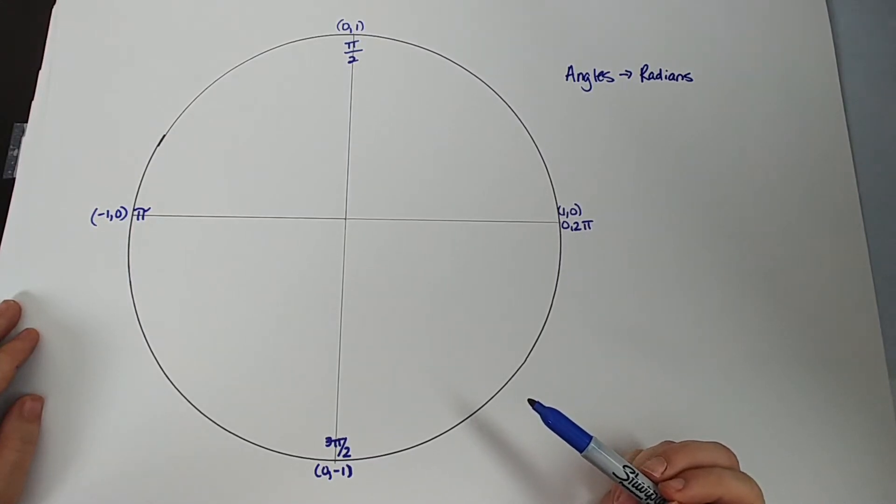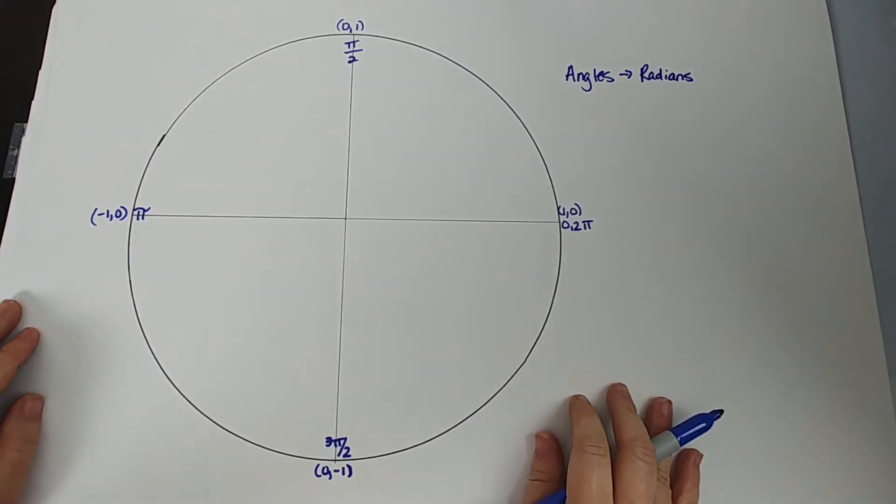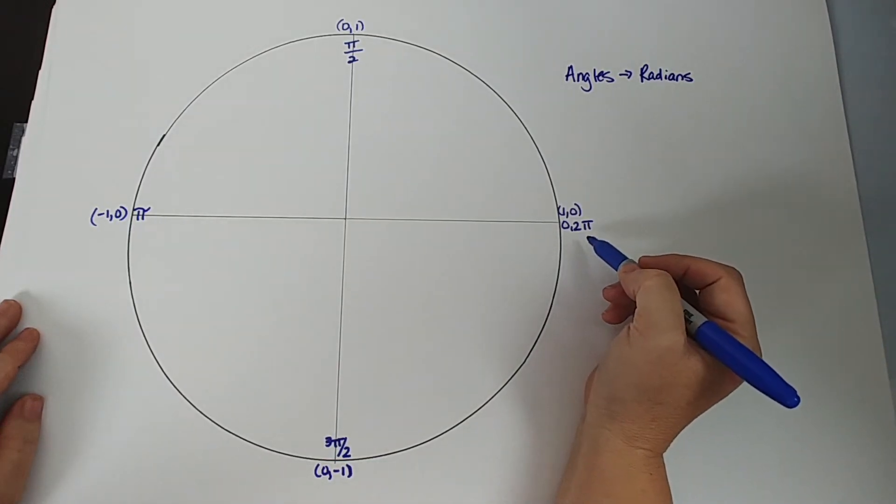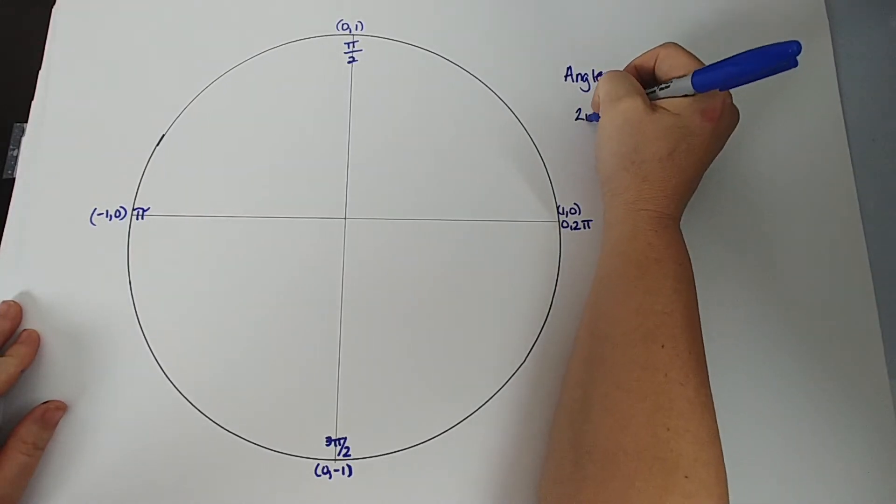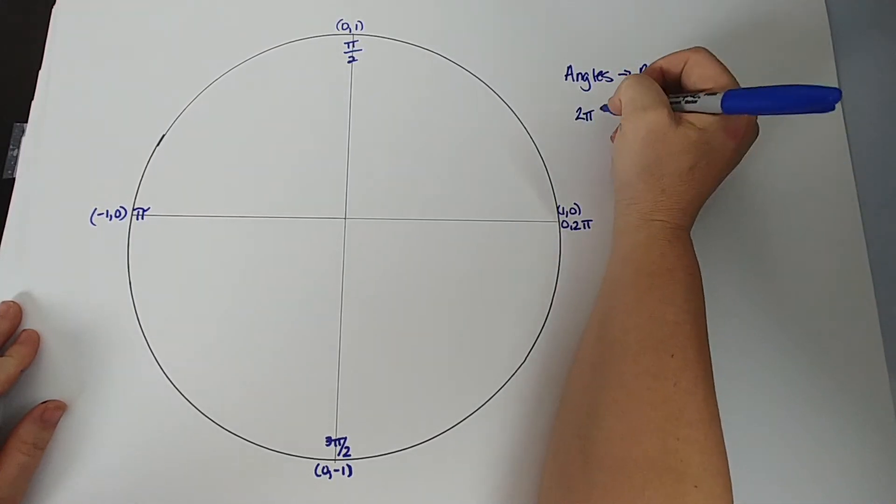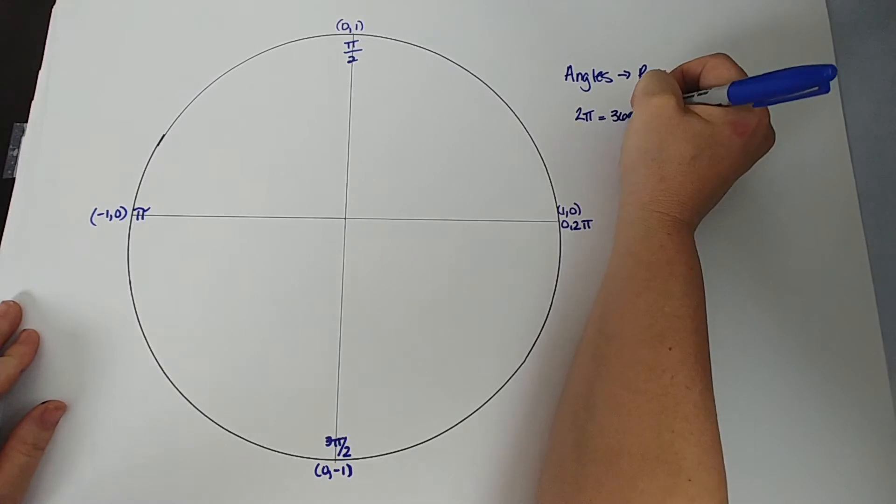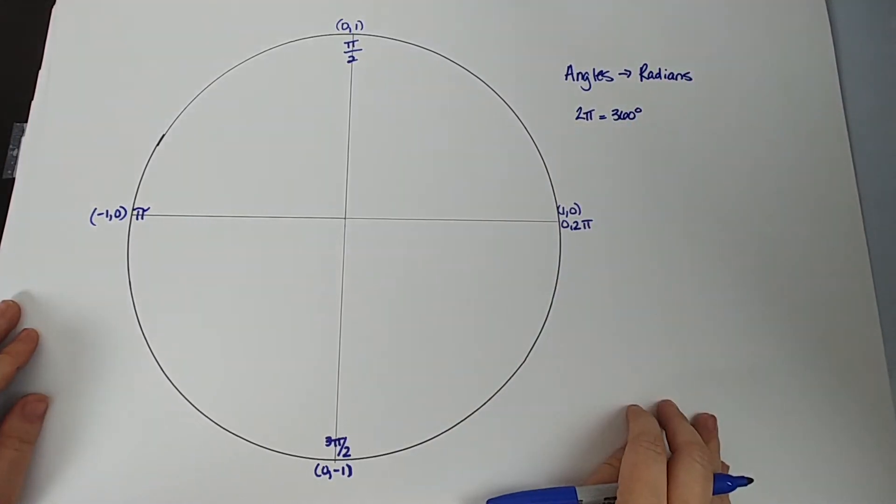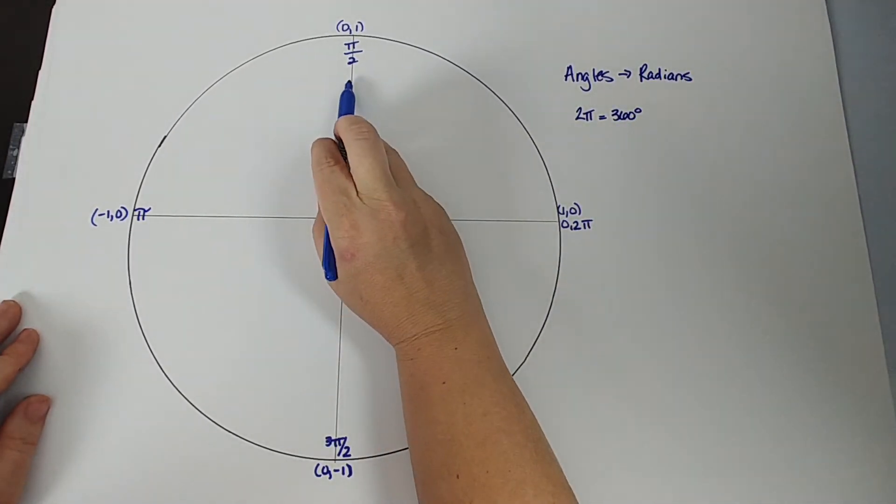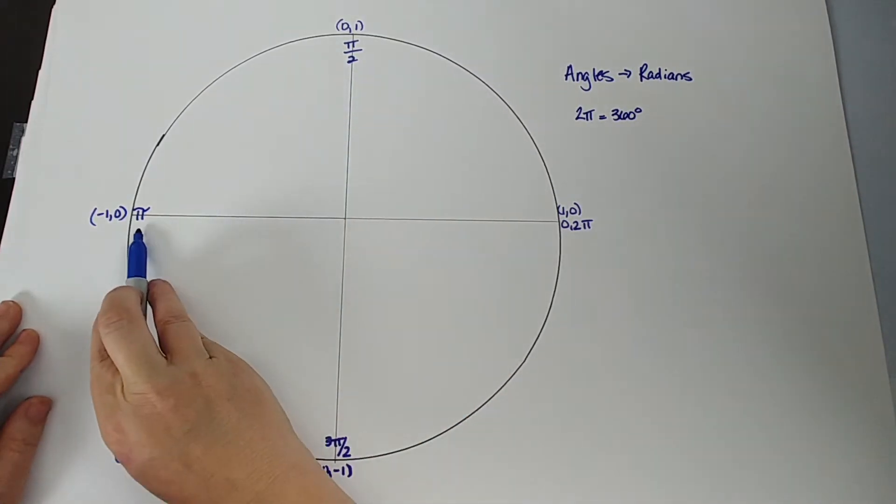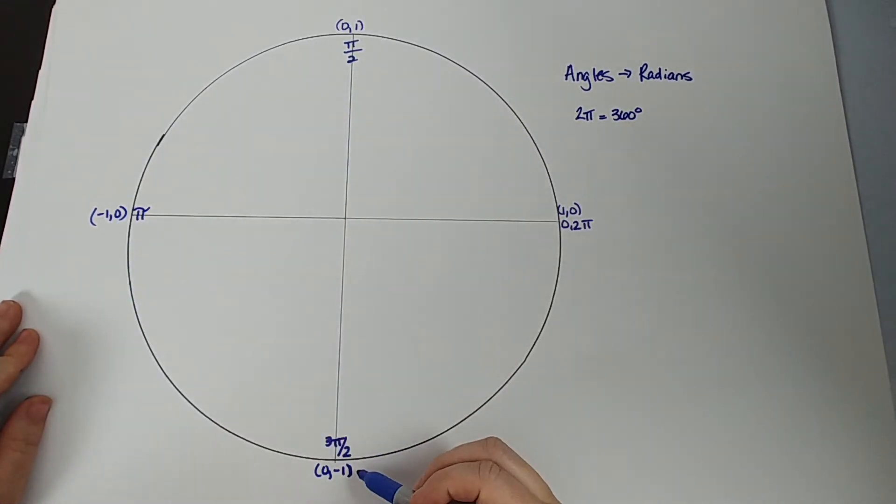We use it to figure out all of our different SOHCAHTOA sine values, cosine values, tangent values. It is super helpful, but you need to memorize it for that quiz where you have to fill out the whole thing. So let's do it. We're going to assume that you know that the unit circle starts at 0 and ends at 2π. In fact, 2π is our radian measure for the complete circle. It is equivalent to 360 degrees.